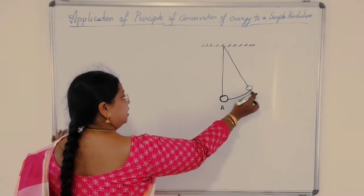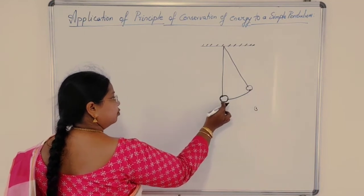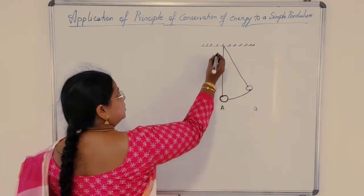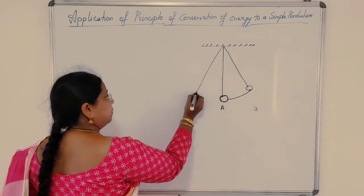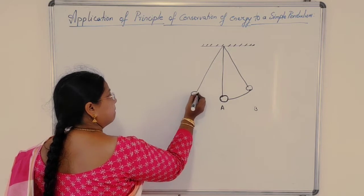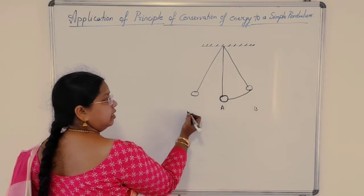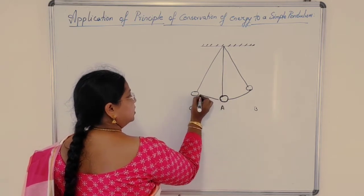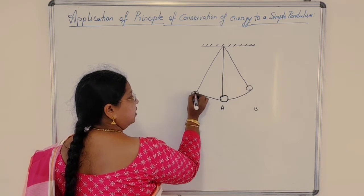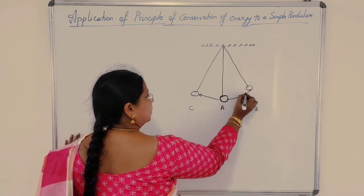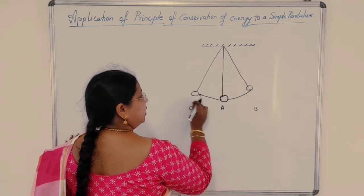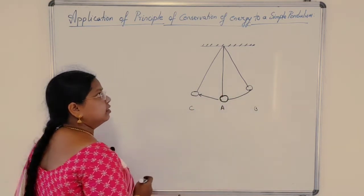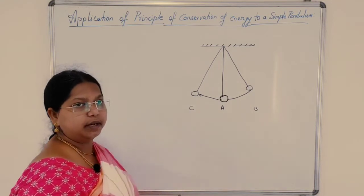Then it starts moving. It comes back to position A and moves towards position C. So this is position C. It moves like this and then comes back, making to-and-fro oscillations. This is the case of a simple pendulum.